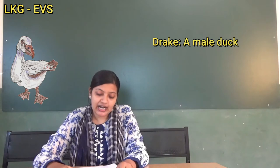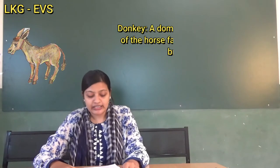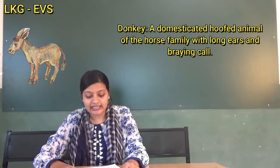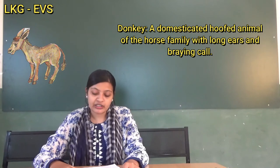Next, Drake. D-R-A-K-E. A male duck is known as a drake. Next, Donkey. D-O-N-K-E-Y. Donkey: a domesticated hoofed animal of the horse family with long ears and a distinctive bray call.